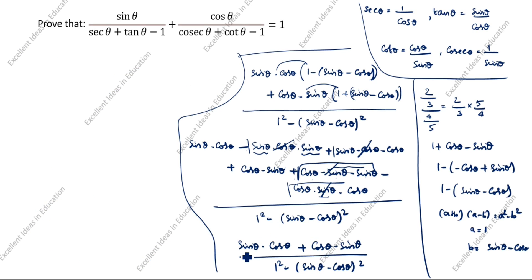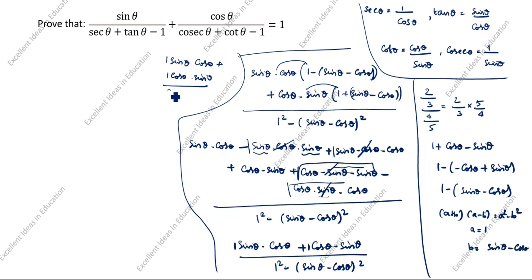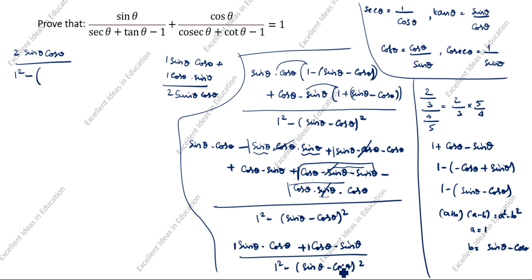In the numerator, sinθcosθ and cosθsinθ are the same term, so we combine them to get 2sinθcosθ. The expression is now 2sinθcosθ divided by 1 − (sinθ − cosθ)².